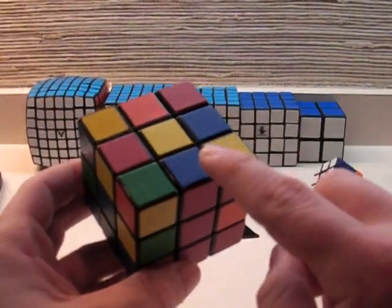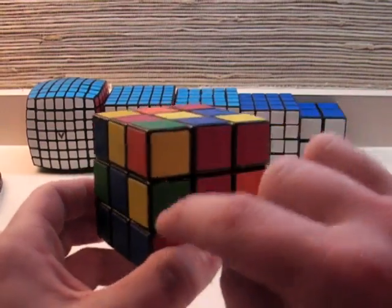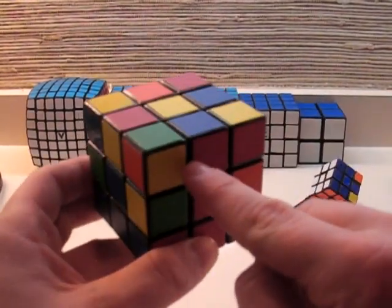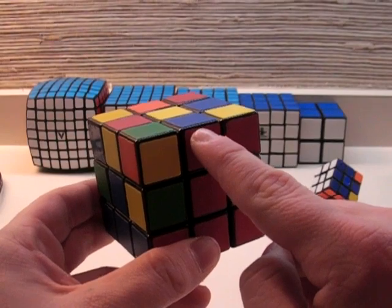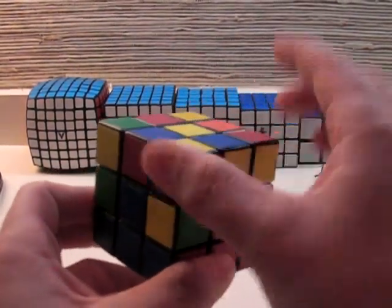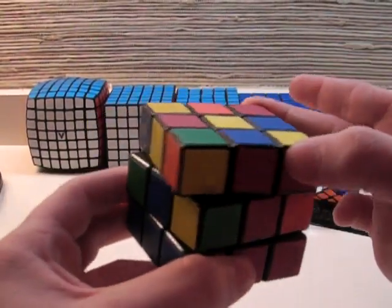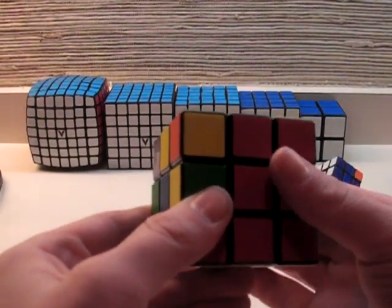So first what you do is you find your edge piece that you want to go in one of the spots, and you match up the side color with its center. So, if this was blue and this was red, you would match up blue and blue. But in this case, I match up red with red, as I show right here.